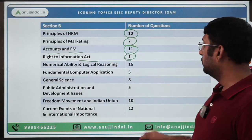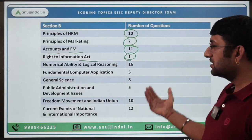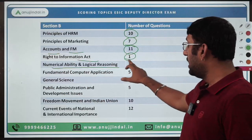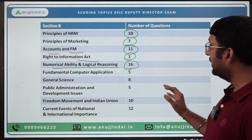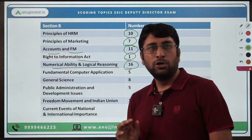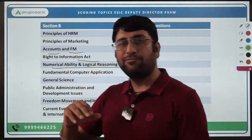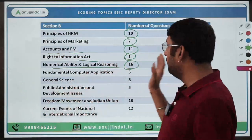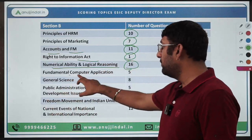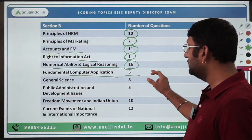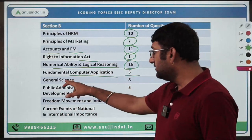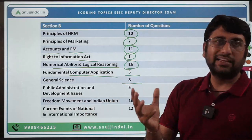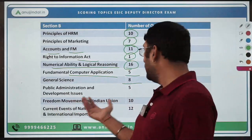One question has come up from RTI in the last year's paper. Numerical Ability and Logical Reasoning has the highest weightage with 16 questions — if you have been preparing for various other competitive exams, you will be well prepared with this. Fundamentals of Computer Application has 5 basic questions. General Science — a mix of questions from physics, chemistry, and biology basics at 10th-standard NCERT level — has 8 questions.